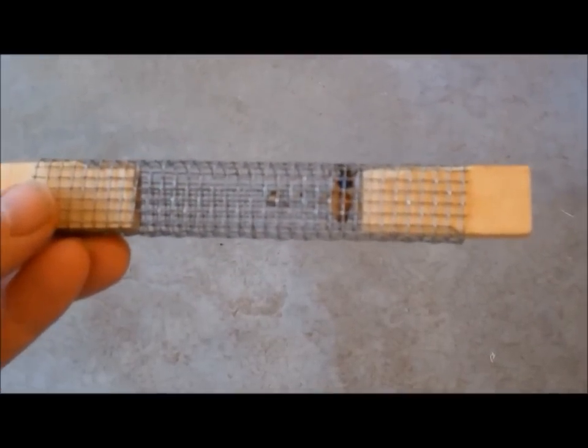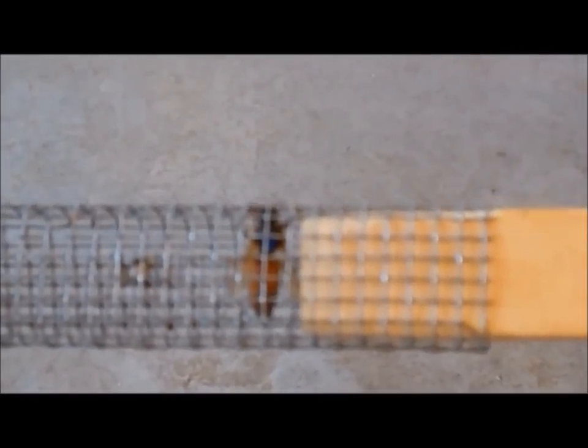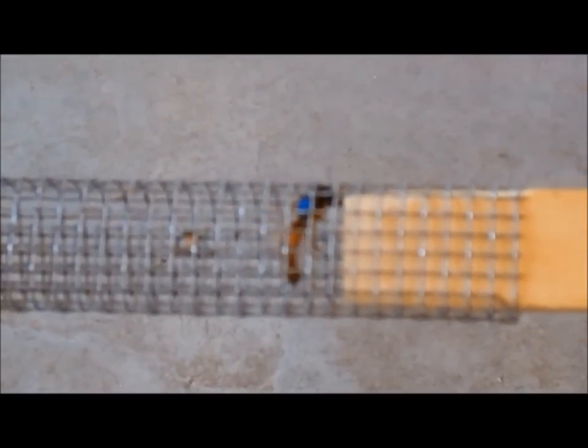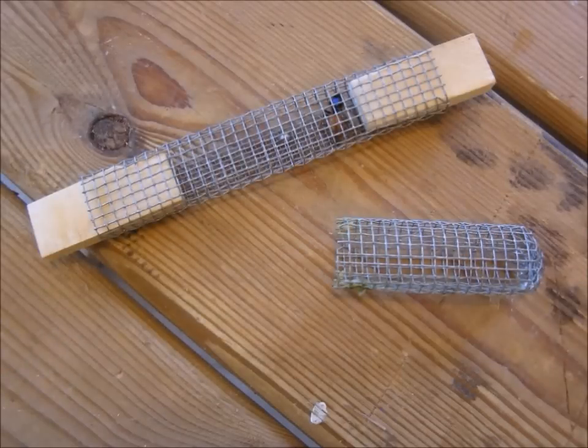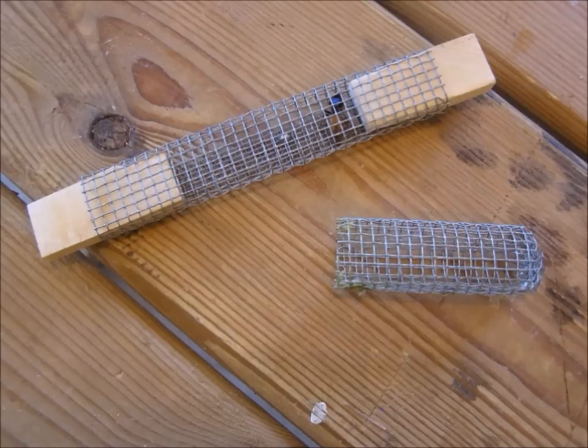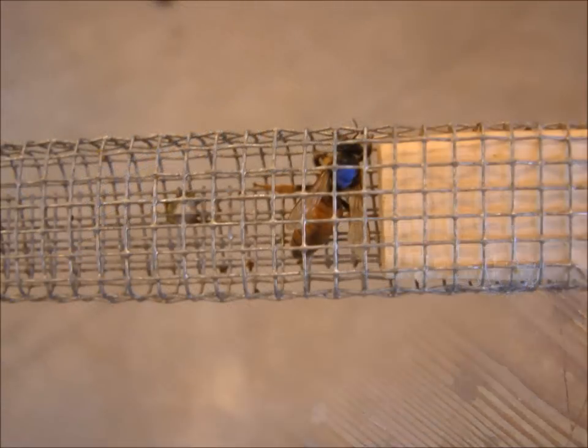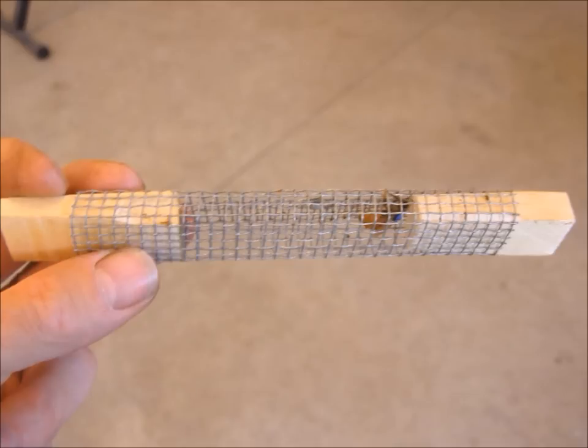A pocket queen cage cannot be much simpler. It is a small piece of number 8 hardware cloth bent into a long rectangular tube. Two wood plugs complete the cage. One is permanent and the other is removable. Like the queen cell protector cage we just made, a pocket queen cage takes only a few minutes to make and uses scrap material from the workshop. You may notice that this queen has been marked. She is on her way to a mating nuke. The cage is small enough that I can easily slip her into my pocket, hence the name, and be on my way.